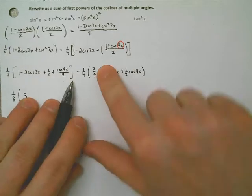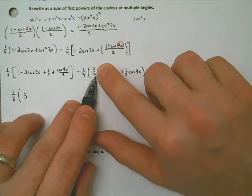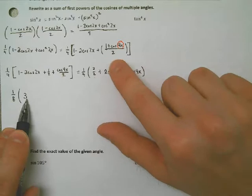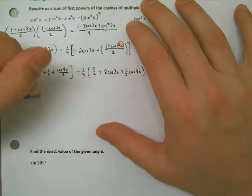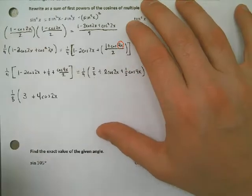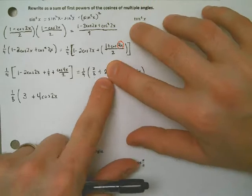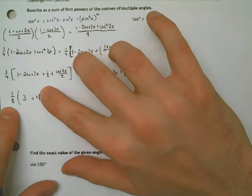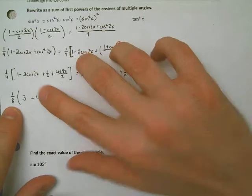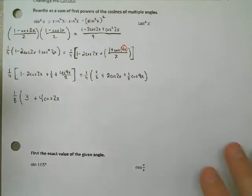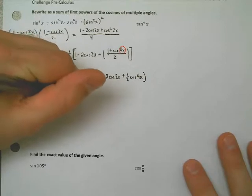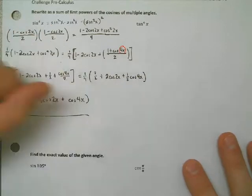This, right by itself, would be 3 over 4 times 2, 8. So I can take 1 eighth times 3. I double everything in here. 2 becomes a 4, cosine of 2x. Because originally I would have had 2 times 1 fourth, 2 fourths, that's 1 half. Now I'm going to have 4 times 1 eighth, 4 eighths, 1 half. And then the last one, the 1 half just goes away, makes it twice as big. And I end up with this as the answer: 1 eighth of 3 plus 4 times the cosine of 2x plus the cosine of 4x.